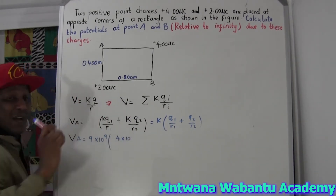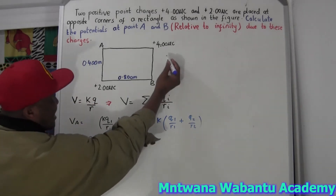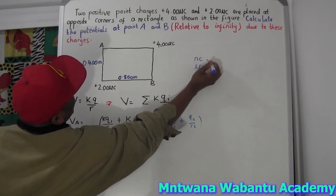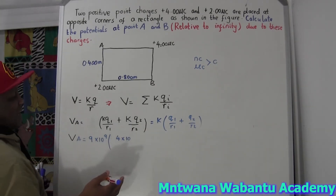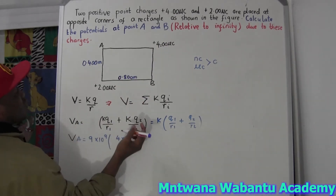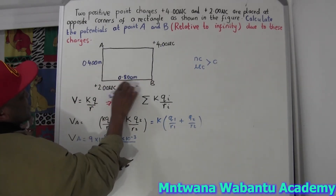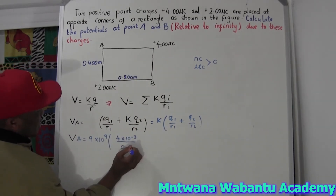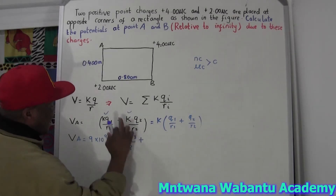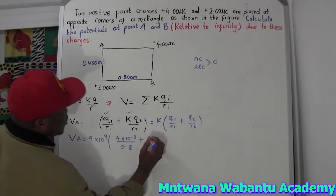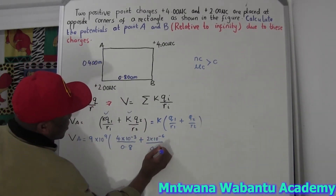Not all the time is it times 10 to the negative 6 — it could be nanocoulombs or microcoulombs, so check the units. For this one, to convert to coulombs you multiply by 10 to the power negative 3. So Q1 over R1: the distance is 0.8. Then plus charge 2 equals 2 times 10 to the power negative 6, divided by R2 which is 0.4.